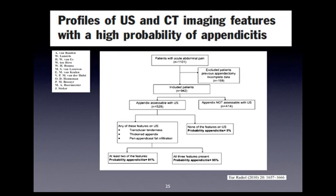Ultrasound as an imaging modality for the diagnosis of appendicitis has been a hot topic within the literature. In a study by Van Randon and colleagues, the more features you have of appendicitis, the more likely you were to pick it up. The findings of transducer tenderness, thickened appendix, and peri-appendiceal fat, when all three were identified, corresponded to a probability of diagnosing appendicitis of 95% with a specificity of 92%. When only two features were identified, the probability went down to 91%.